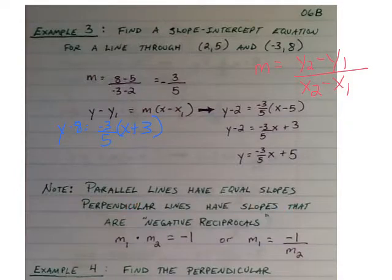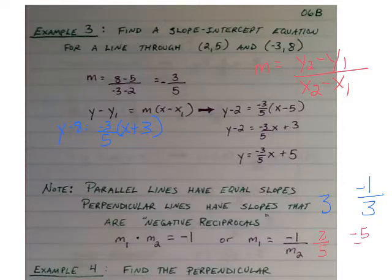For example, if you had a slope of 3, then the other one would have a slope of negative 1 third. Or if you had a slope of 2 fifths, the negative reciprocal would be negative 5 halves, etc. And we'll see that in the next example.